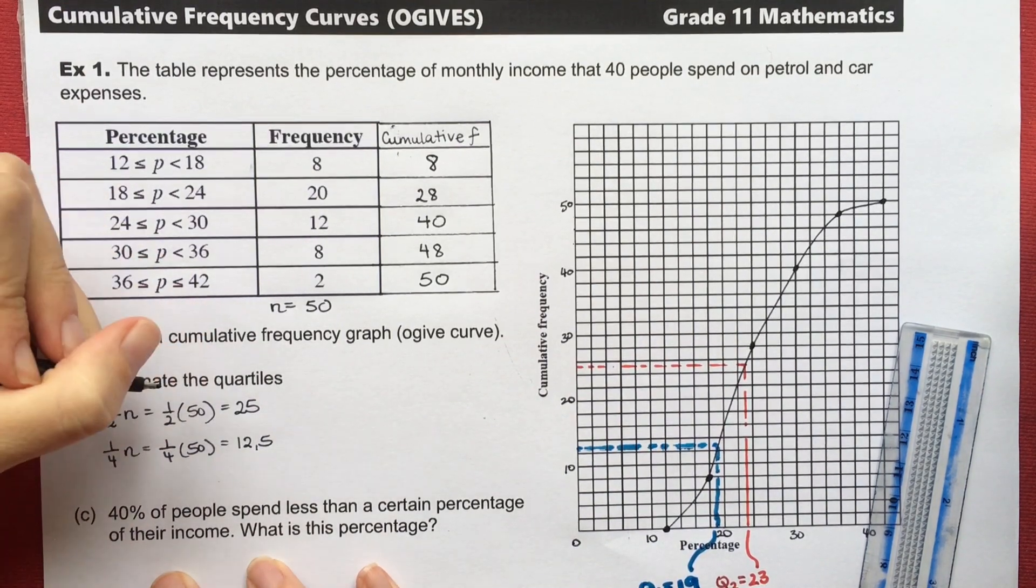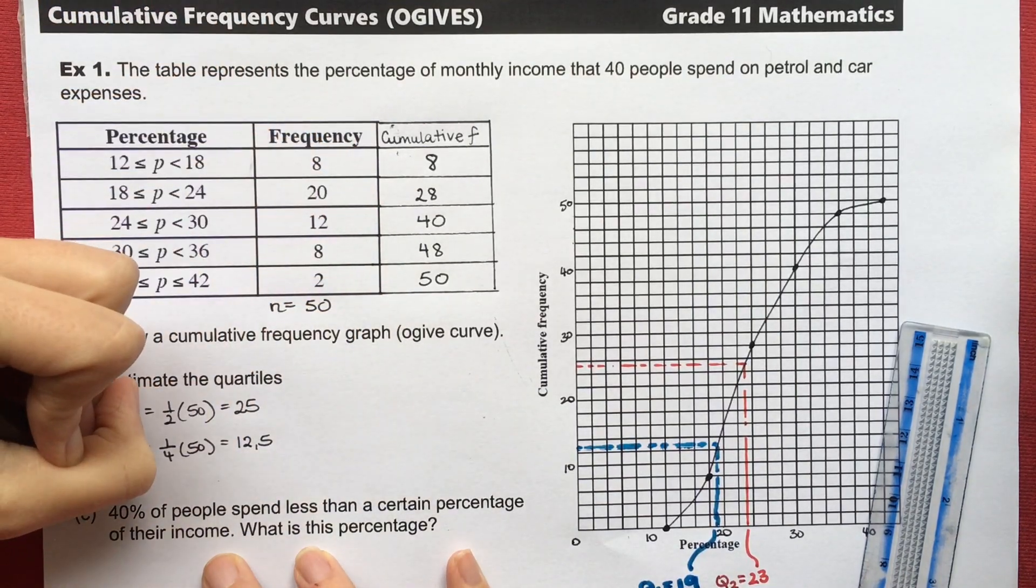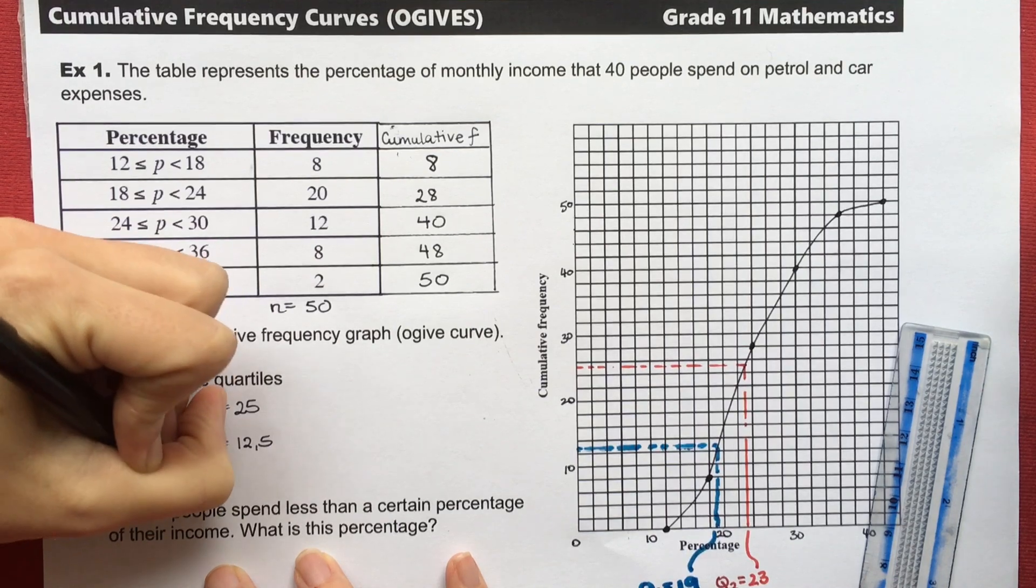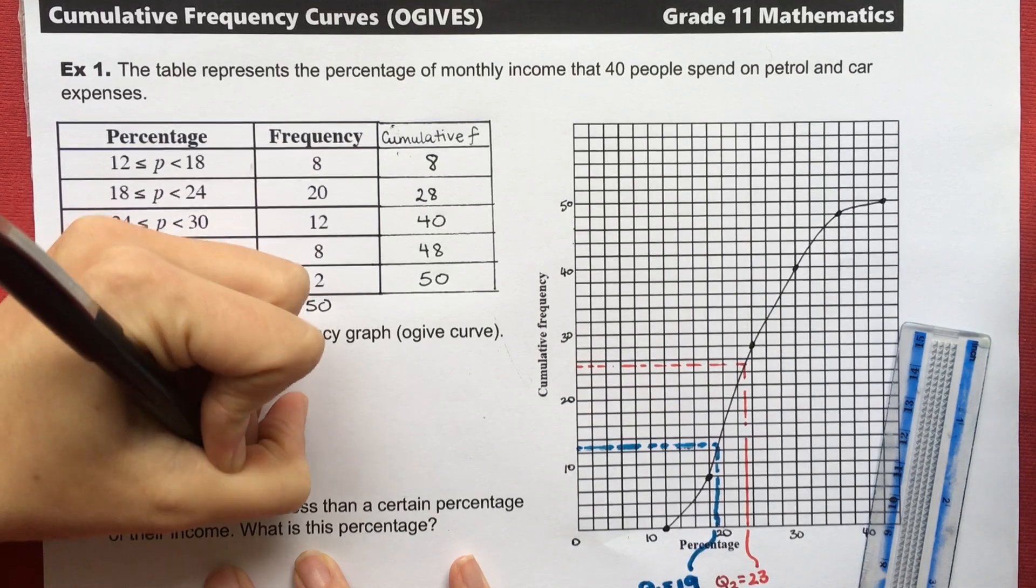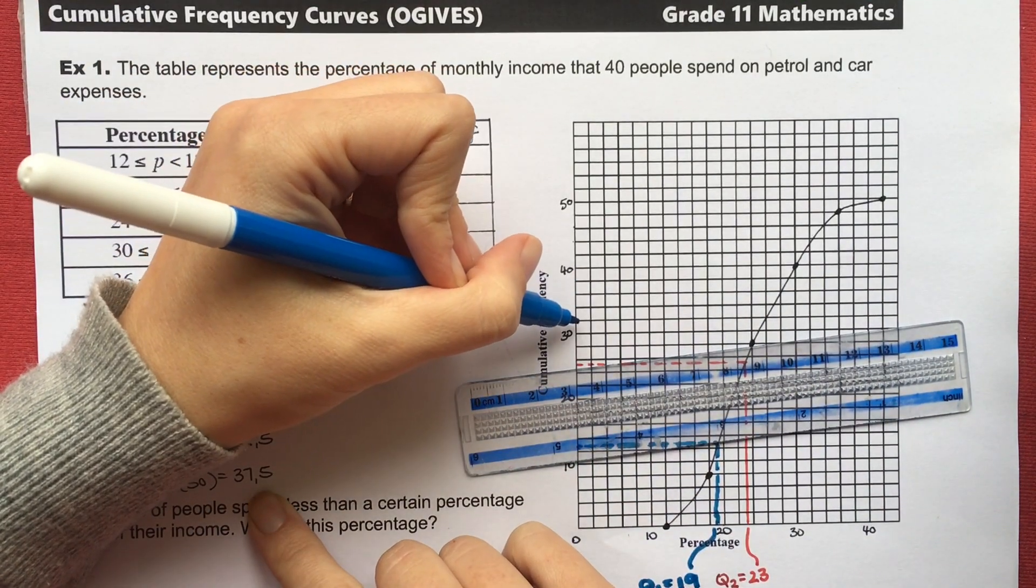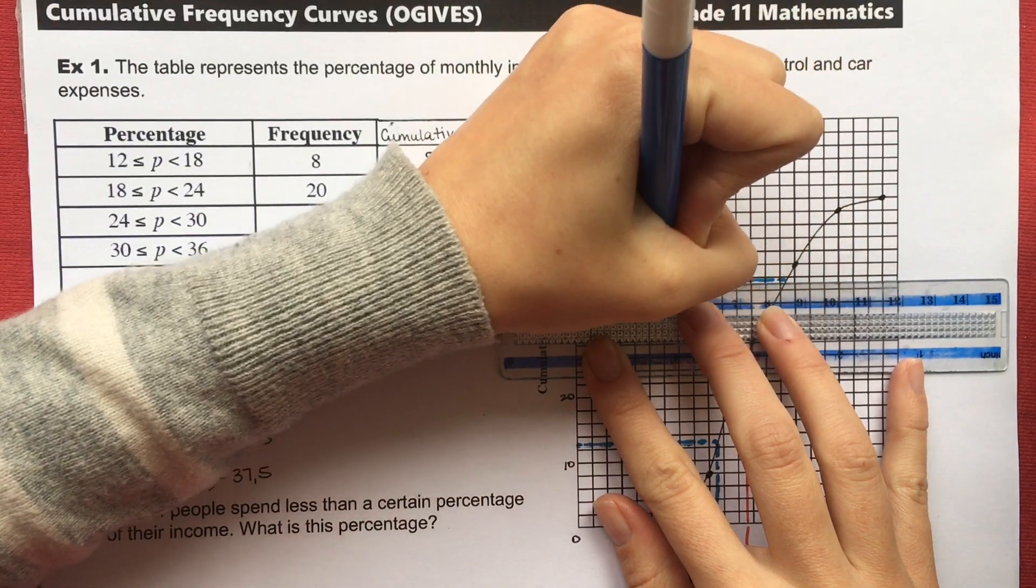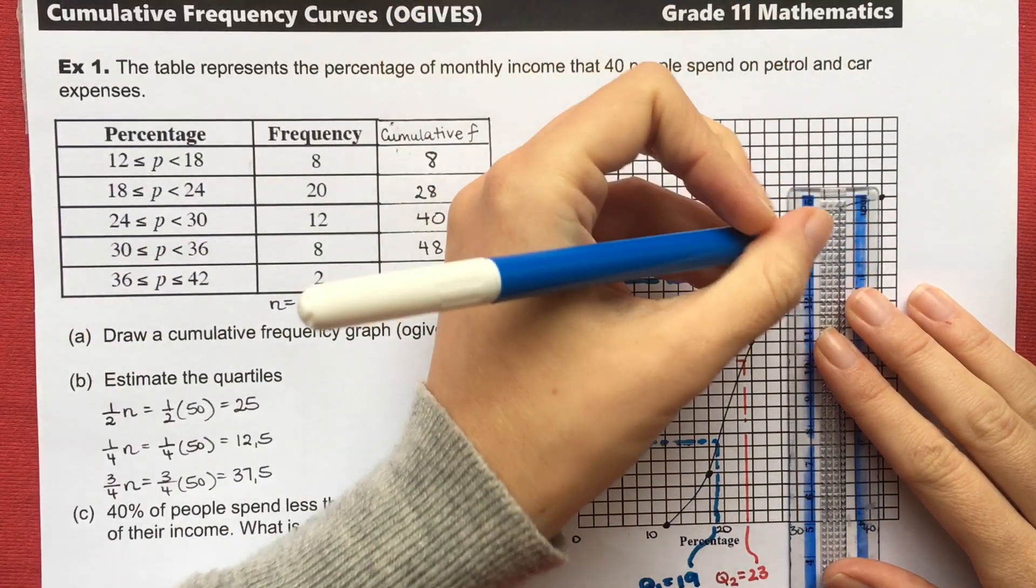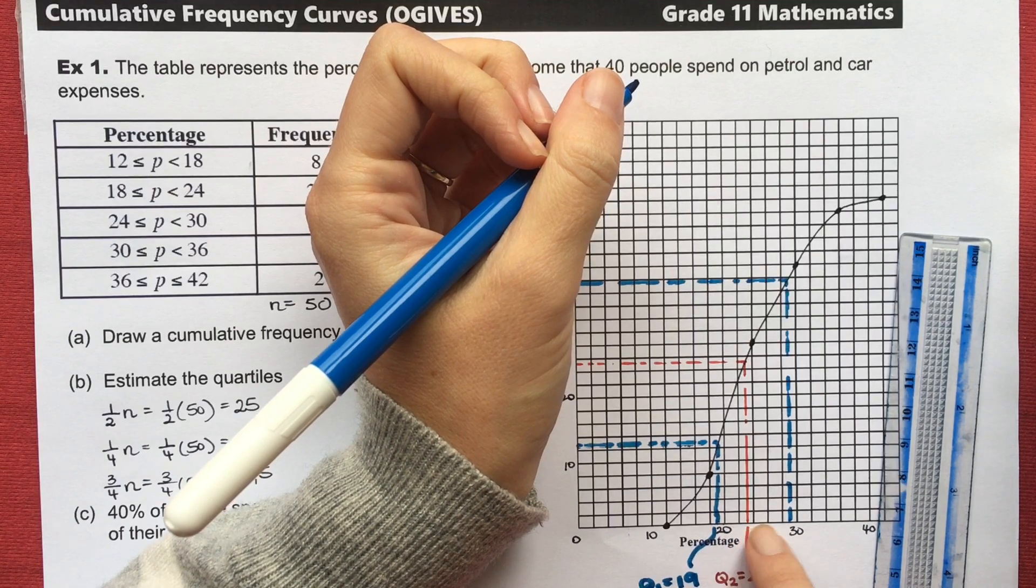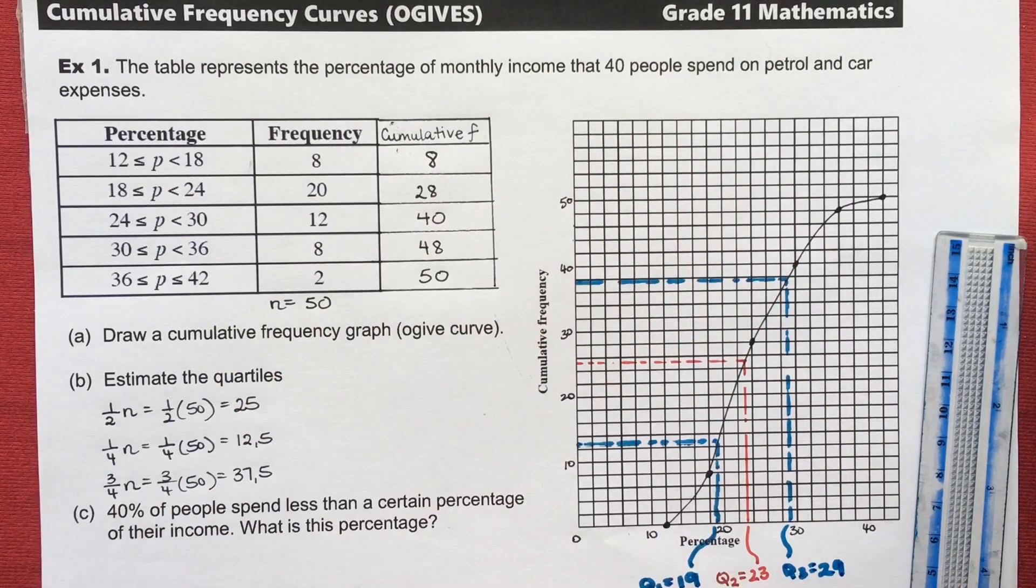And then the third quartile is three quarters of the way through the data or the 75th percentile. So 3 over 4 times 50 gives me 37.5. So my third quartile is between the 37th and the 38th value. So we're 32, 34, 36, 37, almost to 38. And estimating down, I see I'm at 22, 24, 26, 28. So let's call it 29. So Q3 is roundabout 29.